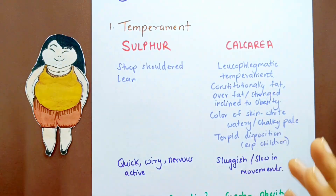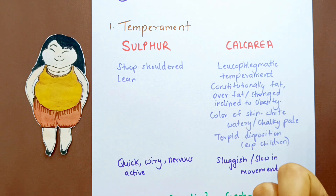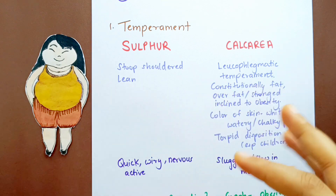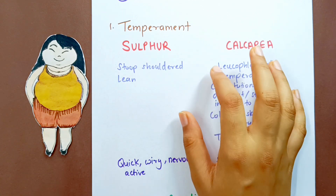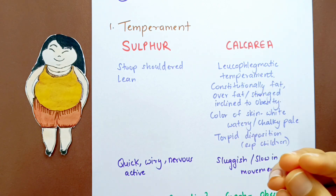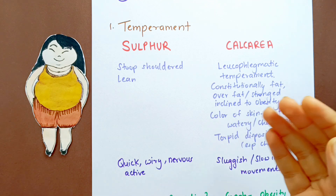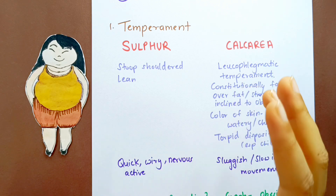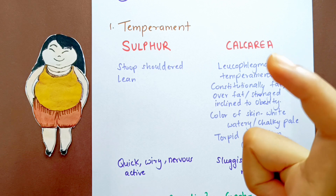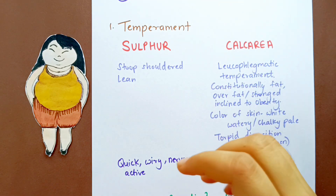Now let's talk about malnutrition, which is very central to Calcarea Carb. Almost all the symptoms of this remedy are attributed to malnutrition — even the diarrhea and bone issues. Malnutrition affects you as a whole; even the mind remains undeveloped because of it. Dr. Nash gives a brief but very apt explanation highlighting the important points of this remedy.